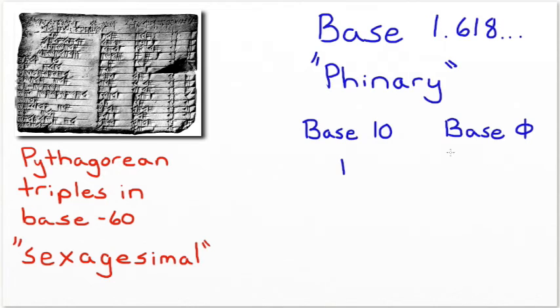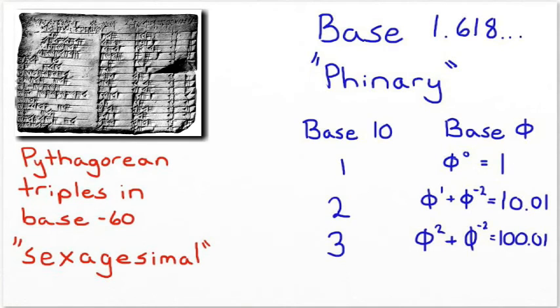Mathematicians have also made use of a number system known as finery, which uses an irrational number, the golden ratio, as its base.